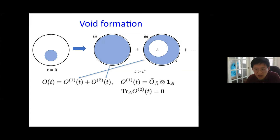Consider the second Rényi entropy of row R: Tr(ρ_R²). The first term gives a contribution from the identity part, and the second term from the void formation part, which I can express in terms of the void formation probability P for rho-hat-zero to form a void. Using the random void distribution (probability = 1/d_B²), I can write this in terms of coarse-grained entropy, yielding an exponential form — and then you get the Page formula. The identity part and the void formation part essentially give a sum of exponentials.